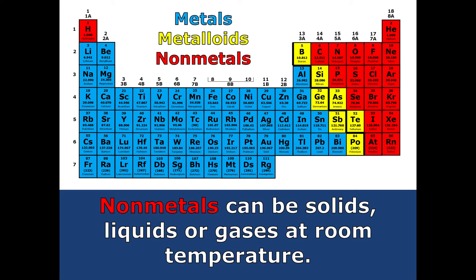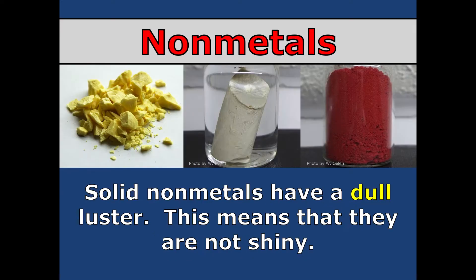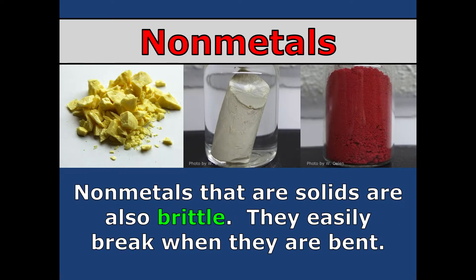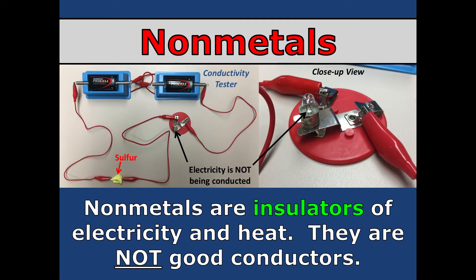Now we'll talk about non-metals. Their traits are the opposite of metals. We're talking about dull — not shiny, not lustrous. Also, non-metals are not malleable. They can actually be broken when bent, unlike metals, so we call those brittle. Like sulfur. They are not good conductors of heat and electricity — in fact, they're called insulators.